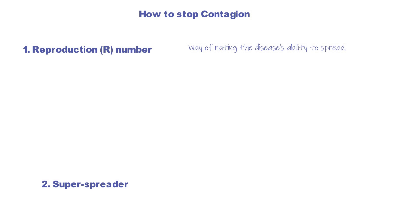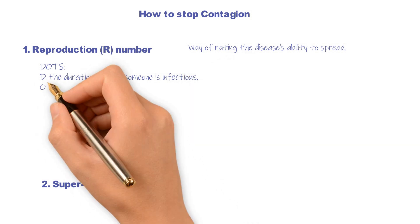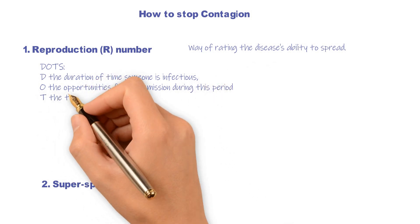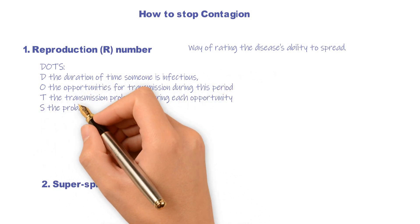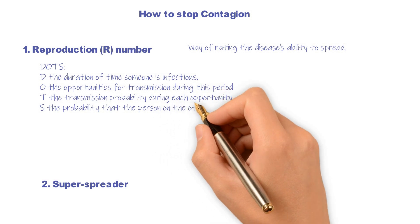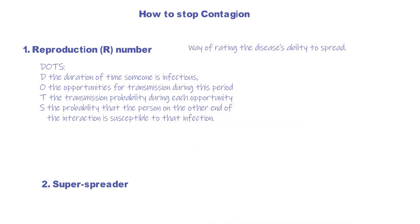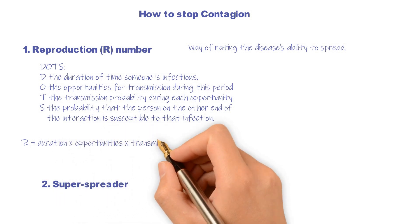Since we can't capture the moment people are infected, scientists instead work backward using available data to calculate the R number, which normally uses: D, the duration of time someone is infected; O, the opportunity for transmission during this period; T, the transmission probability during each opportunity; and S, the probability that the person on the other end of the interaction is susceptible to that infection — DOTS for short. If we multiply them together, we get the value of the reproduction number.